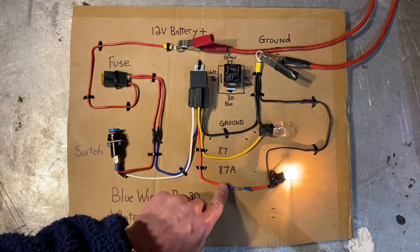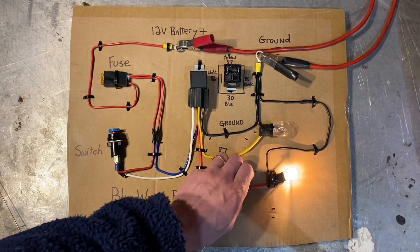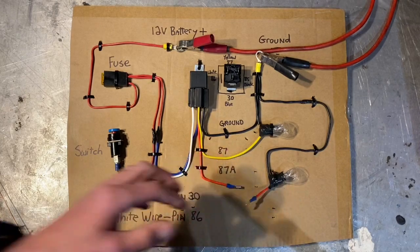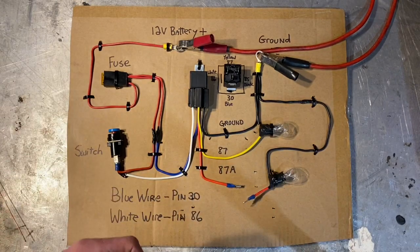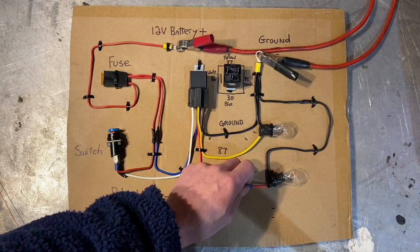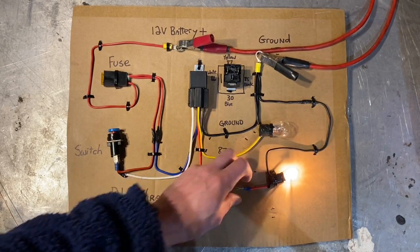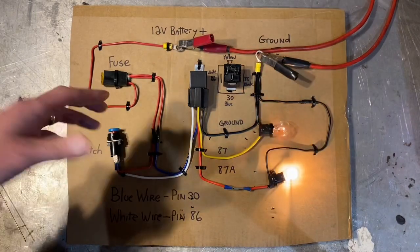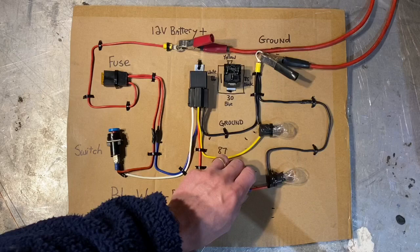That's the way pin 87A works. Now, this would be used if you had fog lights and high-beam lights. A lot of cars will turn off the fog lights if you have your high beams turned on. But if you have your fog lights on, you can also have your regular headlights on. And then as soon as you turn on your high beams, your fog lights turn off. That is one example of when you would use an 87A.